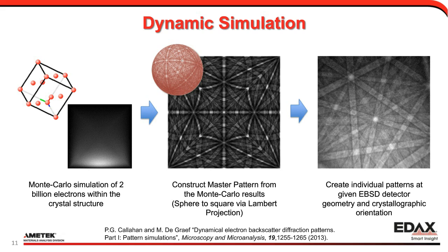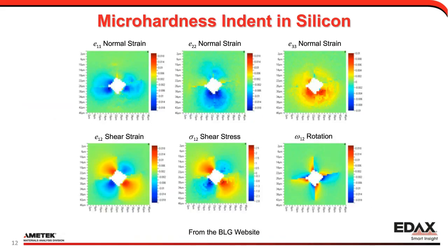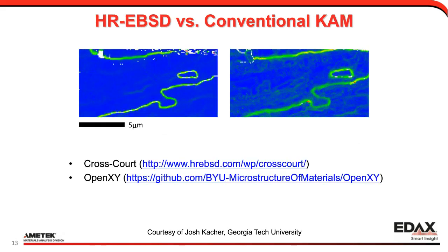Just to show the effectiveness of the technique — if you measure the strains and map them out from many patterns, here's a hardness indent in silicon, and you can see the strain fields that develop along with the different components of the strain tensor and the rotations. This gives a very nice result. Here's an example comparing HREBSD versus the conventional KAM, which will be the focus of my presentation. I just wanted to give you an idea of what's going on with HREBSD, because I'm seeing it more and more at conferences and it is a good development for EBSD.